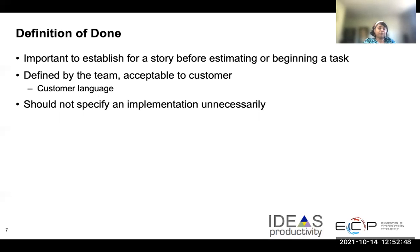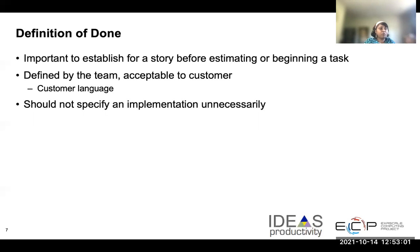One thing to remember is that you don't need to specify a whole lot of details that are orthogonal in your done criteria. You don't have to specify implementation details — for example, saying I'm going to have a screen with a submit button here and a review button there — unless there's a big dependency in the design. So do not get overly specific with your done criteria.